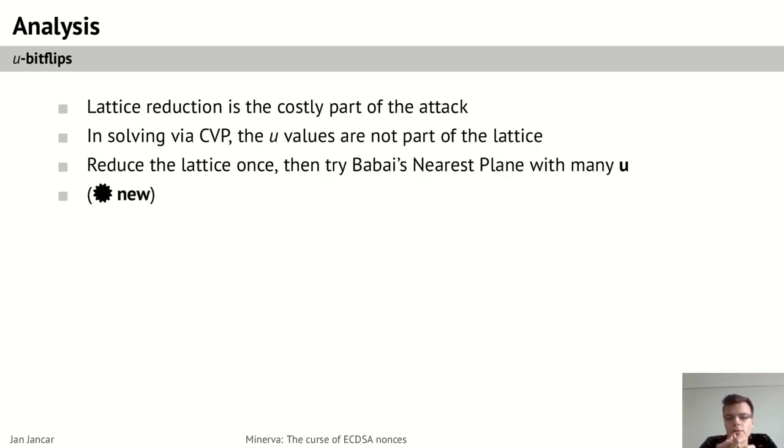In this kind of lattice attack, the lattice reduction step is the most costly. The technique of random subset is able to avoid errors but has to run the costly step many times to do so. We introduce a technique which allows us to fix some errors without running the lattice reduction step many times, but instead running the relatively cheap Babai's nearest plane algorithm many times. So it is important to note that when solving via CVP, the U values are not part of the lattice basis construction, so you have the lattice basis and you have the vector U. And we can thus construct the lattice and reduce it only once and then try to solve CVP with many different vectors U with changes in some of the high bits of the elements of the vector U_i.